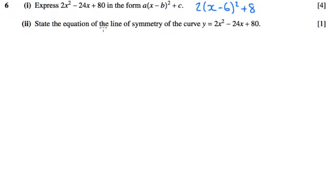Part 2 now wants us to state the equation of the line of symmetry of this curve. Once we've got something in completed square form, it tells us the vertex—if it's a positive quadratic, the minimum point of a curve.